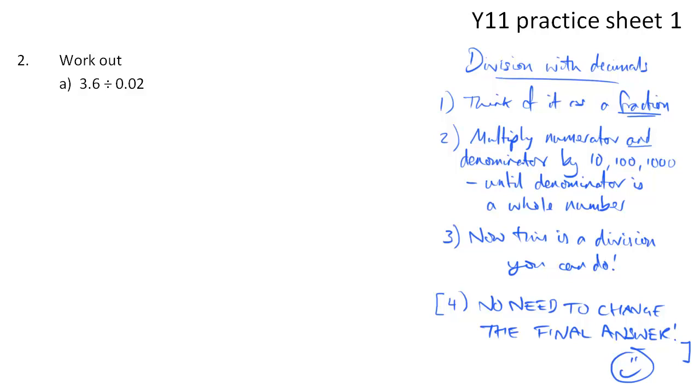So let's have a look at this example, 3.6 divided by 0.02. If you think of it as a fraction, 3.6 divided by 0.02 is 3.6 over 0.02. If I'm going to make my denominator into a whole number, that is going to be the number 2. So what do I need to multiply by to get 2? Hopefully you can see that I need to multiply by 100. And if I do that to my denominator, I've got to do it to my numerator as well. So if you multiply 3.6 by 100, we get 360. Now you should then have a sum that you can do. 360 divided by 2 should be one that you don't even have to try. Our answer is 180.